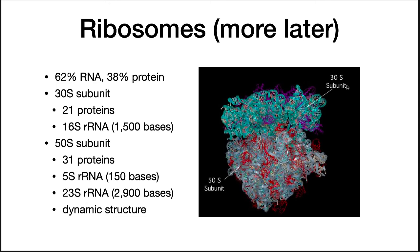Inside the cytoplasm you will also find the gene expression machinery, the heart of which is the ribosome. It is 62% RNA and 38% protein, and it's divided into two subunits. The 30S subunit has 21 proteins and one RNA — the 16S ribosomal RNA of about 1,500 base pairs. The 50S subunit has 31 proteins and two RNAs — the 5S RNA of 150 base pairs, and the 23S RNA of about 2,900 base pairs. The RNA catalyzes the core enzymatic function of the ribosome — it's important to remember that it's the RNA that catalyzes its core function. It is a dynamic structure that changes shape as it carries out its purpose.